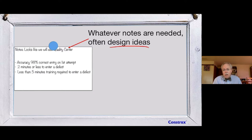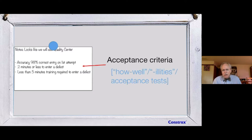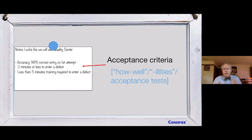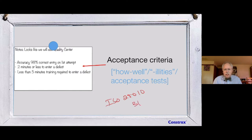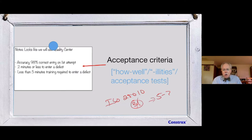The other key field on the back is acceptance criteria: when I perform that function, how well do I have to do it to say I've done it acceptably? These are often called the '-ilities' — availability, usability, maintainability, extensibility, portability, and so on. There's an ISO standard 25010 that provides a starter kit of about 31 of these, though typically only 5 to 7 really matter at any given time. Together these form the acceptance test.